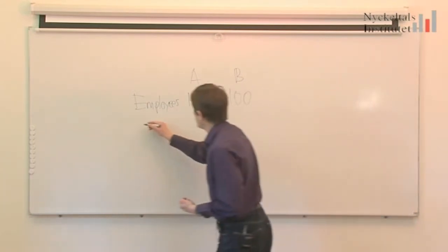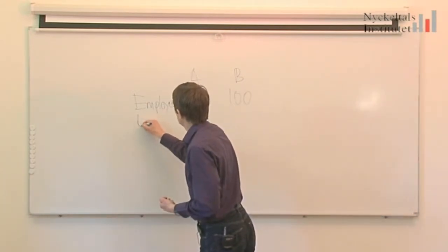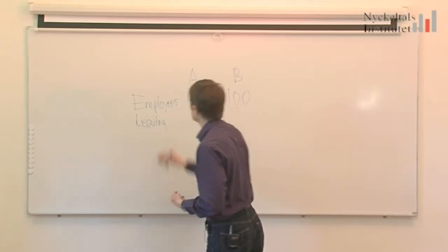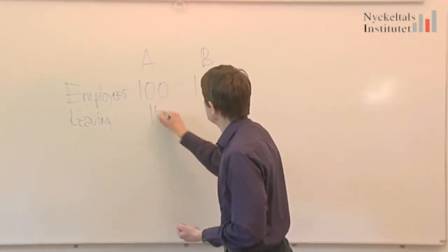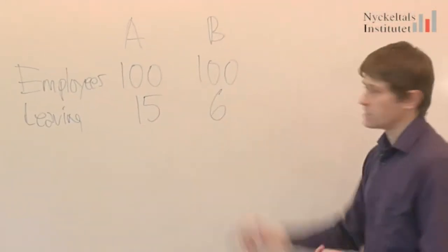During one year we have a number of employees that are leaving our company or our organizations. In A we have 15 leaving and in B we have 6.